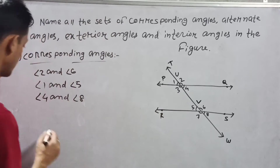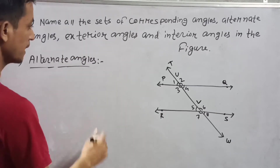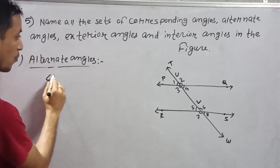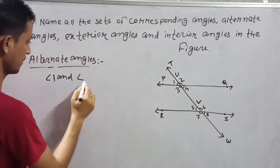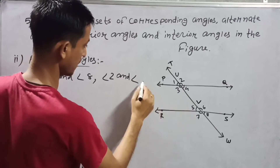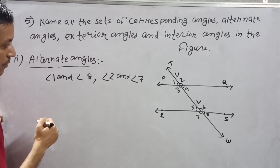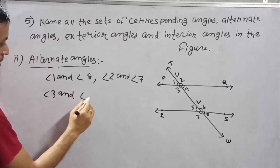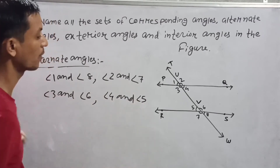3 and 7 correspond to each other. Now alternate angles — we have alternate exterior and alternate interior. Alternate angles: angle 1 and angle 8, angle 2 and angle 7, angle 3 and angle 6, angle 4 and angle 5. These are the alternate angles.